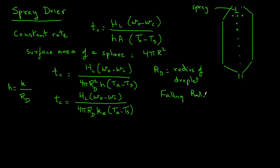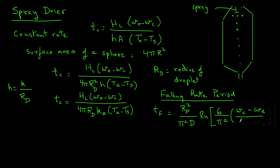For the falling rate period, we need to have an expression for a spherical geometry. And the expression for a sphere is TF equals RP square, where RP will be the radius of the particle at the critical point, divided by pi square capital D times natural log 6 over pi square, in parentheses, WC minus WE divided by W minus WE.